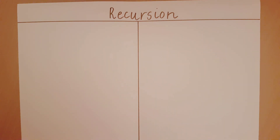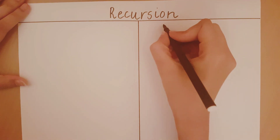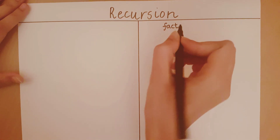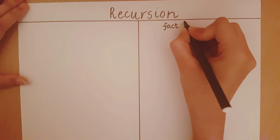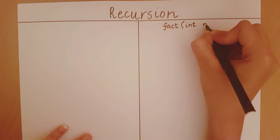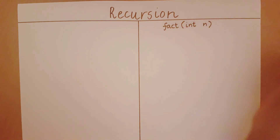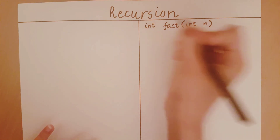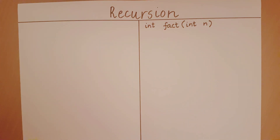In this video we will take a look at how to write a program for recursion. Let's take the same example as the previous video of finding the factorial. My function is going to be named FACT. I'm going to take some number as my input parameter for which I want to find the factorial, and I'm going to return an integer because I want to return the factorial of the number.